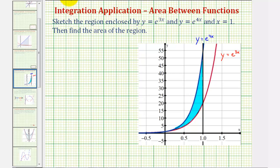So looking at our graph, notice how the lower limit of integration would be 0. So a equals 0, b would be equal to 1, the upper limit of integration, and therefore the area is going to be equal to the integral of the top function minus the bottom function.